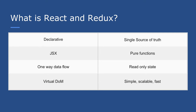Immutability is important because it affects the way we render our components. We do shallow comparison in our components, and if we are mutating our props and state, the React component won't be aware that the state or prop has actually changed. This can lead to bugs that are difficult to debug. So we should ideally avoid mutating data.